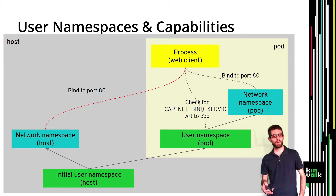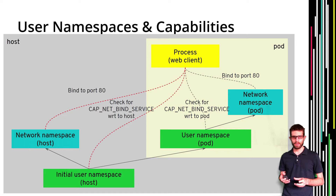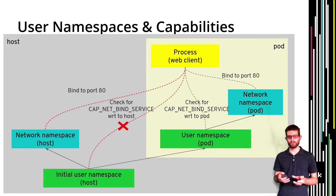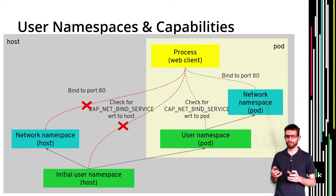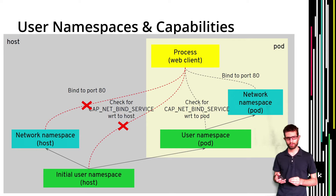On the other hand, if the process wants to open a port on the host's network namespace, which is owned by the initial user namespace, the capability check is performed against the initial user namespace. The process doesn't have the capability there, so it is not able to perform that operation. The key takeaway is that user namespaces allow us to give a process capabilities to perform privileged operations on resources owned by its pod, while that capability is meaningless for resources of other pods or the host.